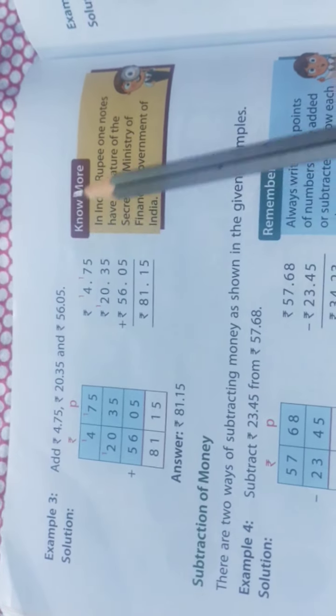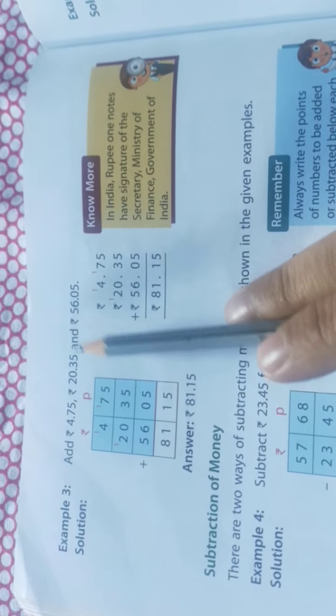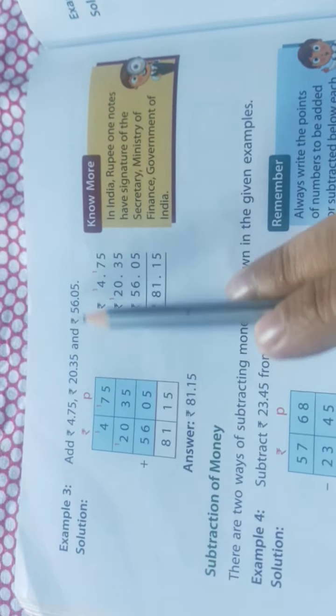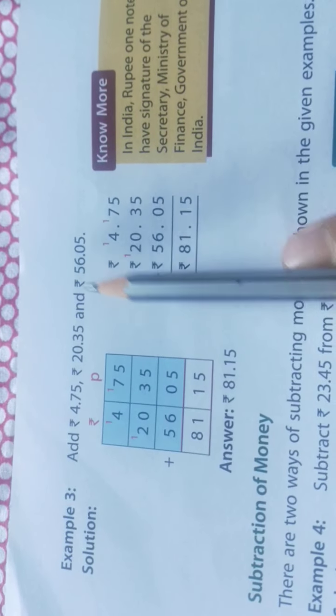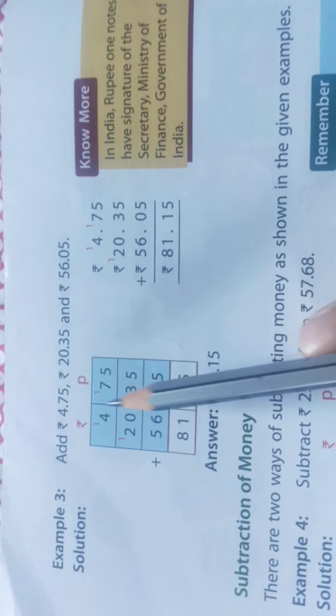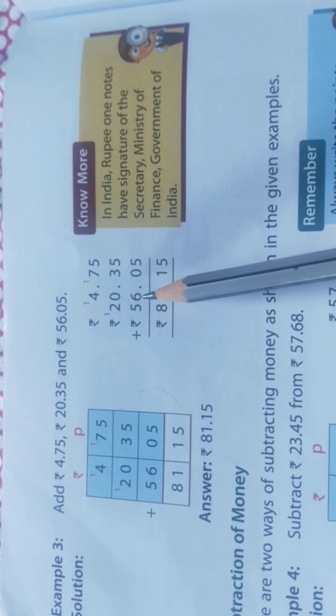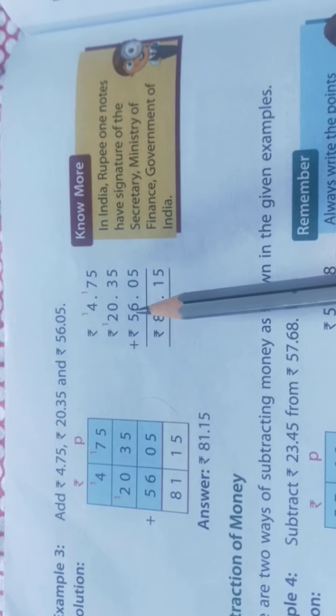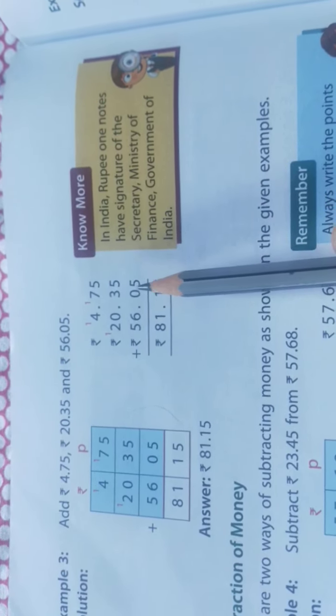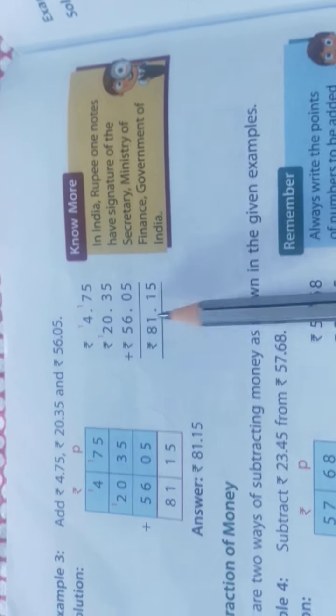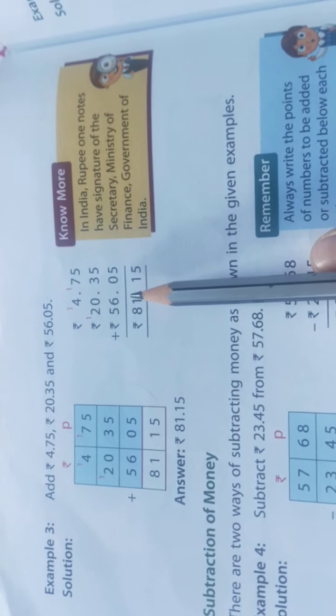On the next page, they have added three amounts: 4 rupees 75 paise, 20 rupees 35 paise, and 56 rupees and 5 paise. Either you make a box and write paise in one column and rupees in another column and add it, or you write rupees under the rupees column and paise under the paise column — after the point — and add them up to get the same answer.